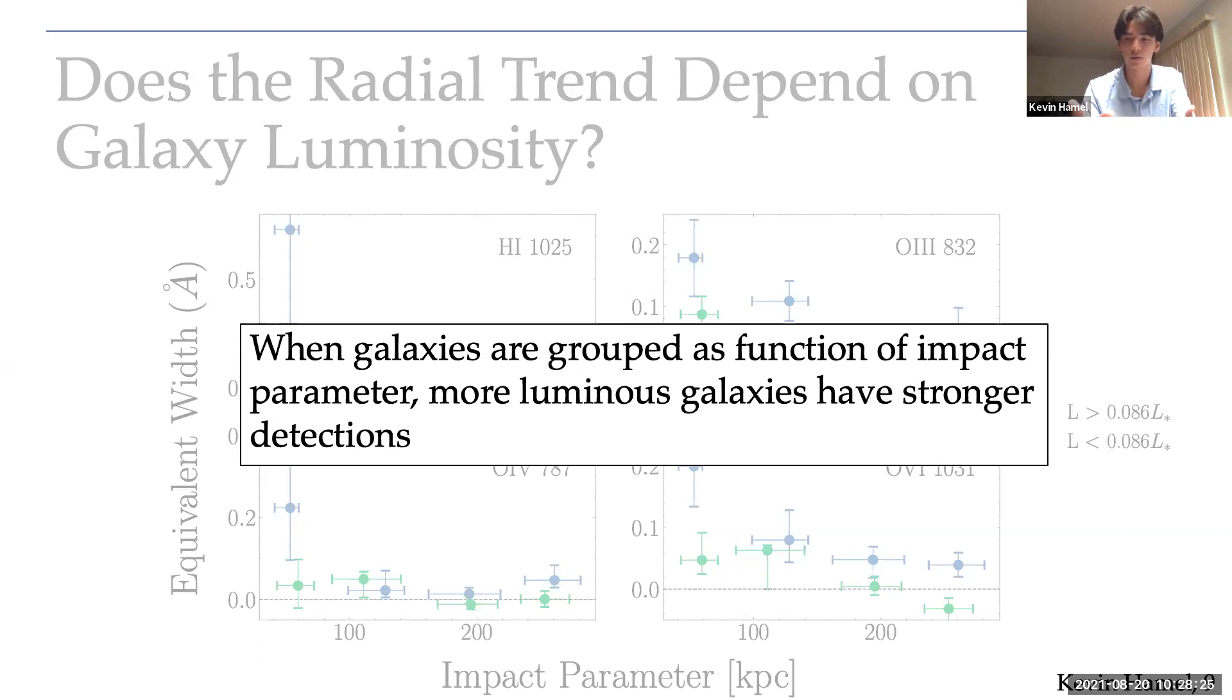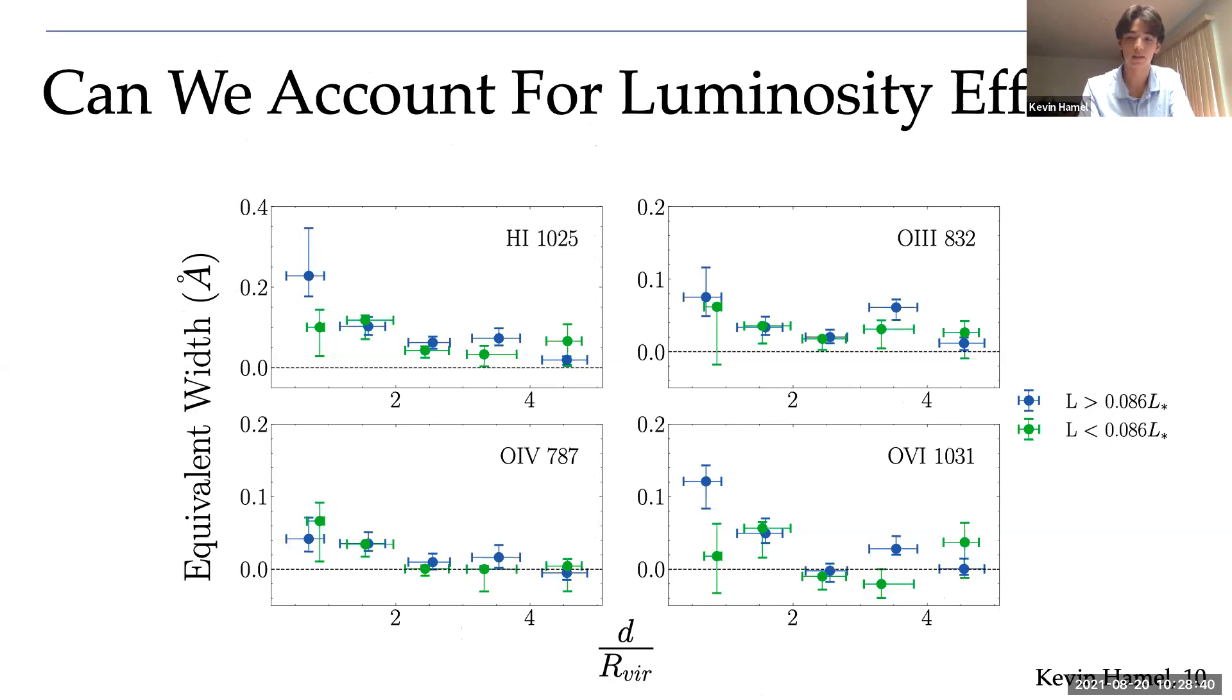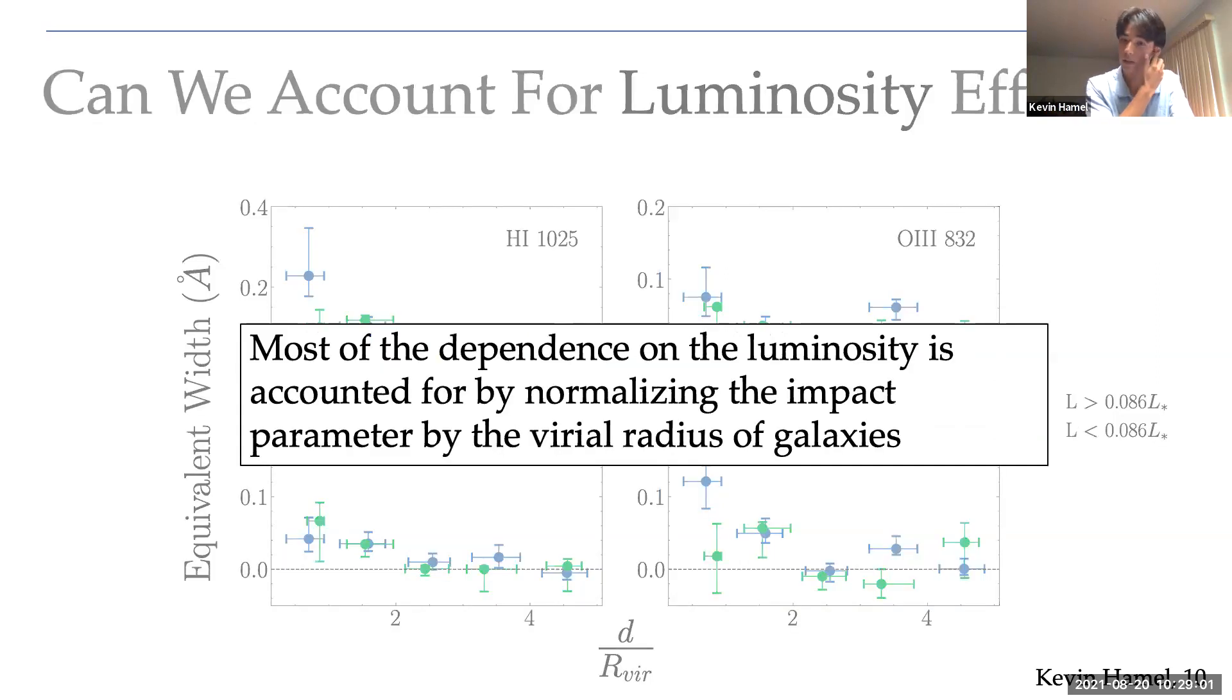But can we account for that difference in absorption strength by grouping galaxies differently so that in the future we are able to use the full luminosity range of the CUBS sample to investigate whether other galaxy properties impact the CGM? And that's what we did. We grouped galaxies after normalizing their impact parameters by their virial radius to remove this dependence on mass. And except for the first stack, you can see that this different grouping strategy accounted for most of the luminosity differences. The data points are closer to each other. So going forward, I use this new grouping strategy. Most of the dependence on the luminosity is accounted for by normalizing the impact parameter by the virial radius of galaxies.